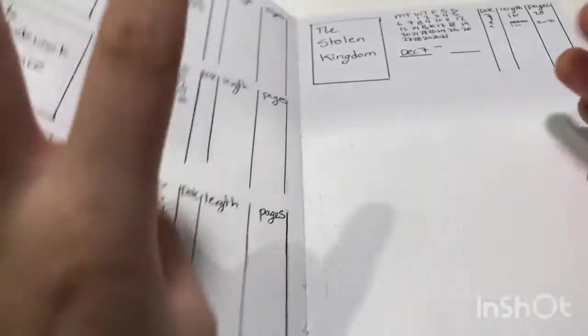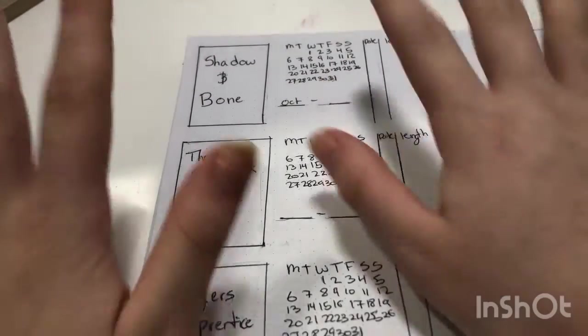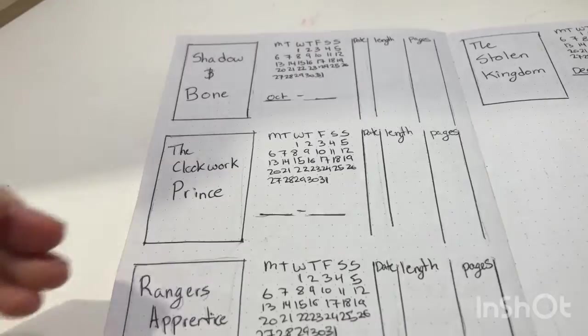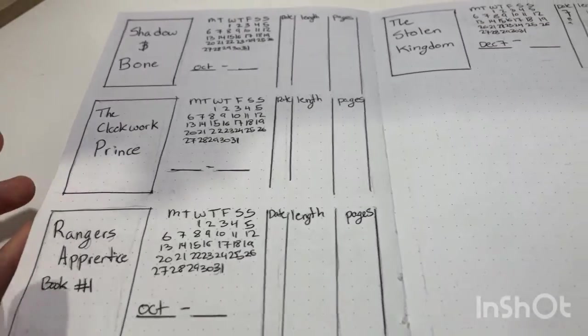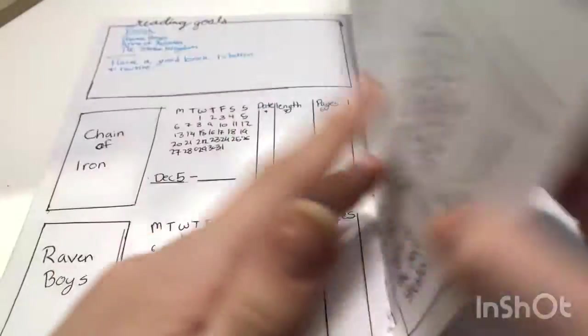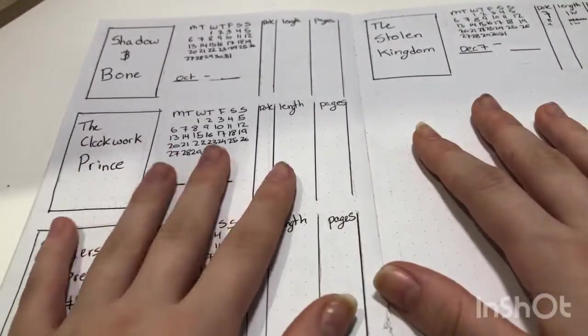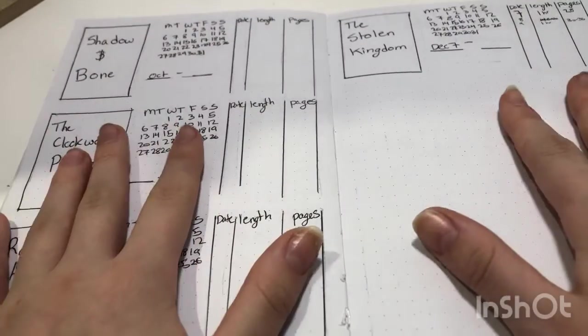This one over here, I started in October. I started a lot of books in October guys. I went on a book shopping spree, not the best decision. So currently I have several books that I am reading. So I think it's nine in total that I've put into this book tracker up here.